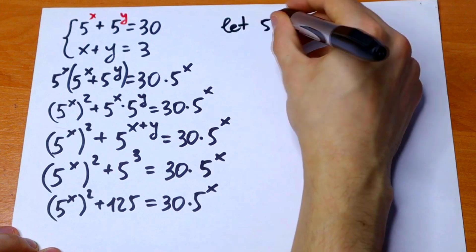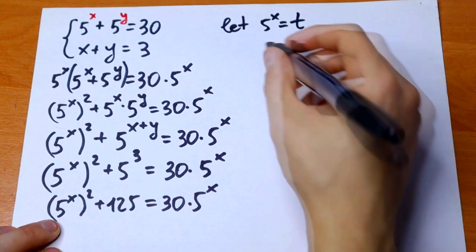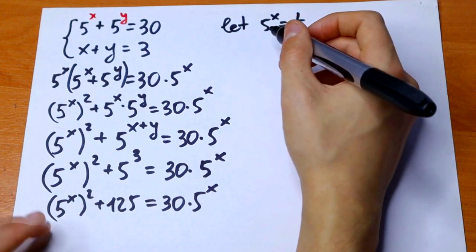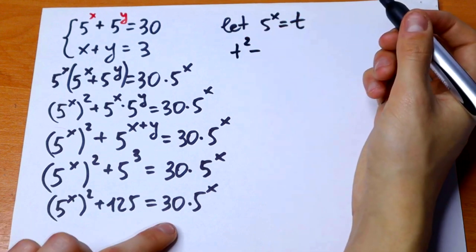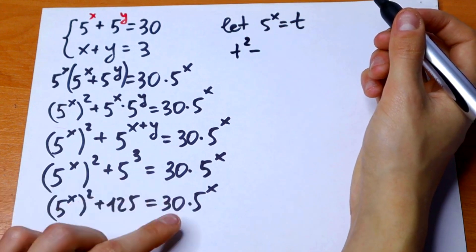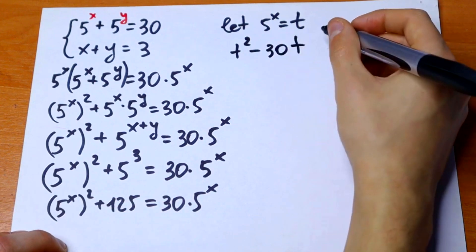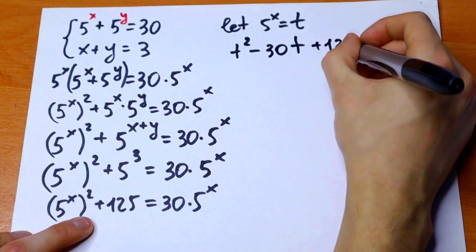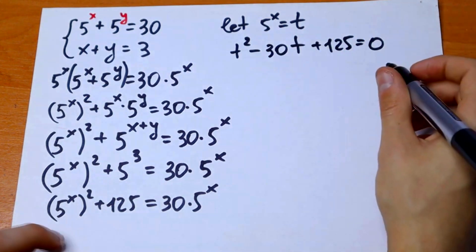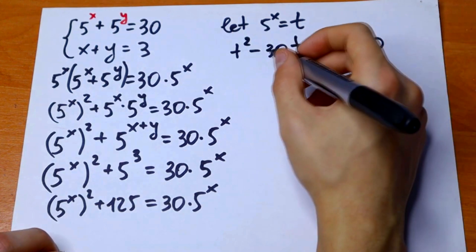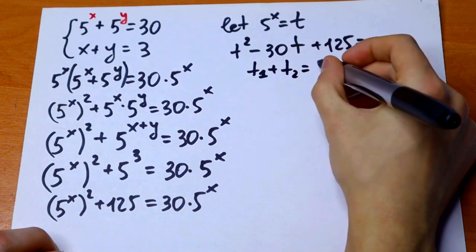Let 5 to the power x equal t. We get the quadratic equation: t squared minus 30t plus 125 equals 0. This is a classic quadratic equation.